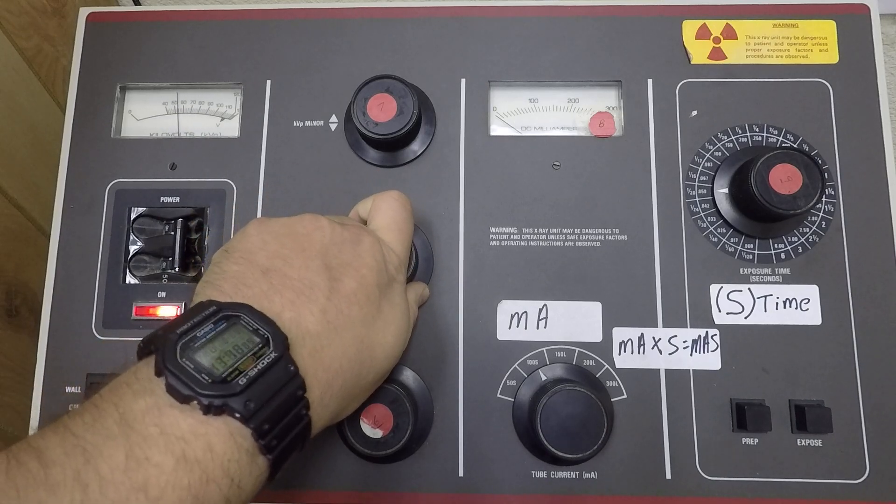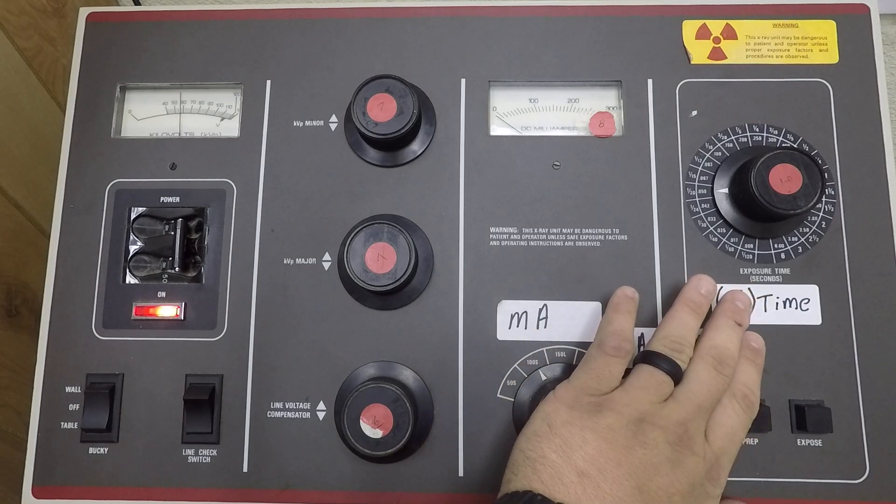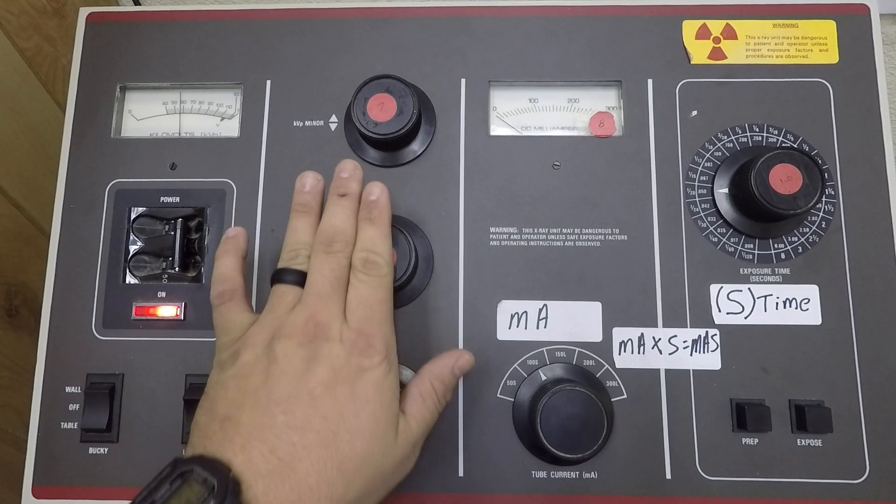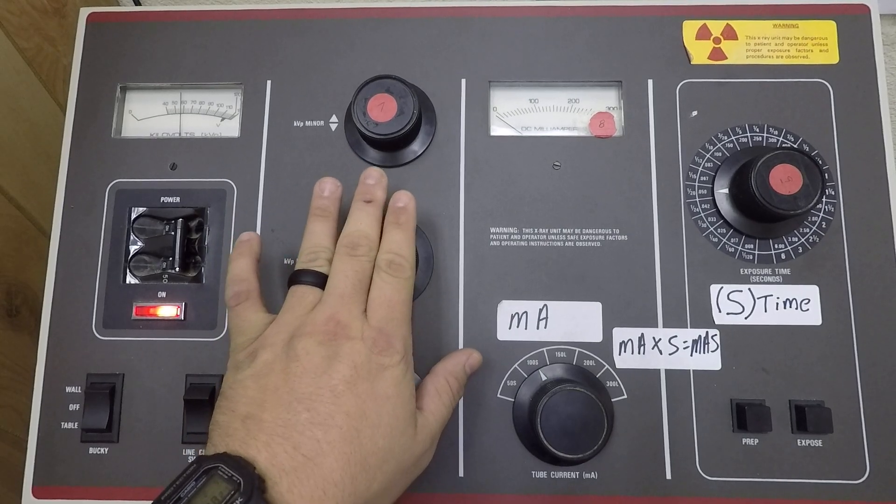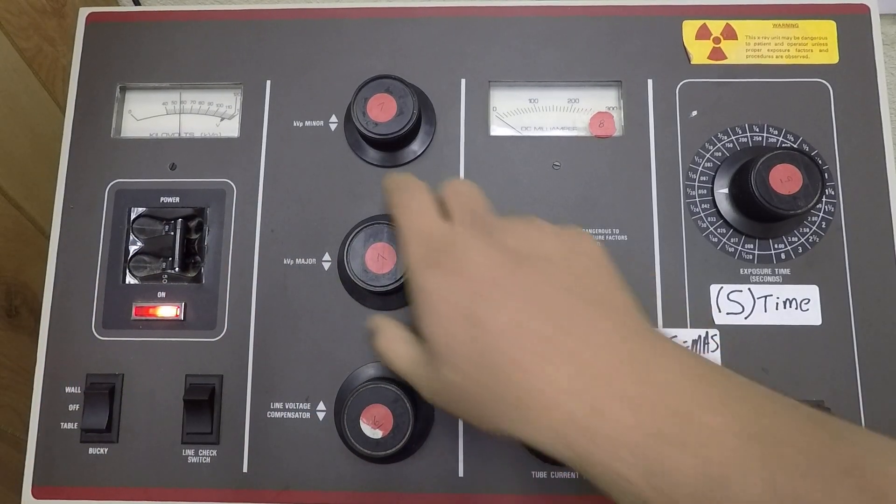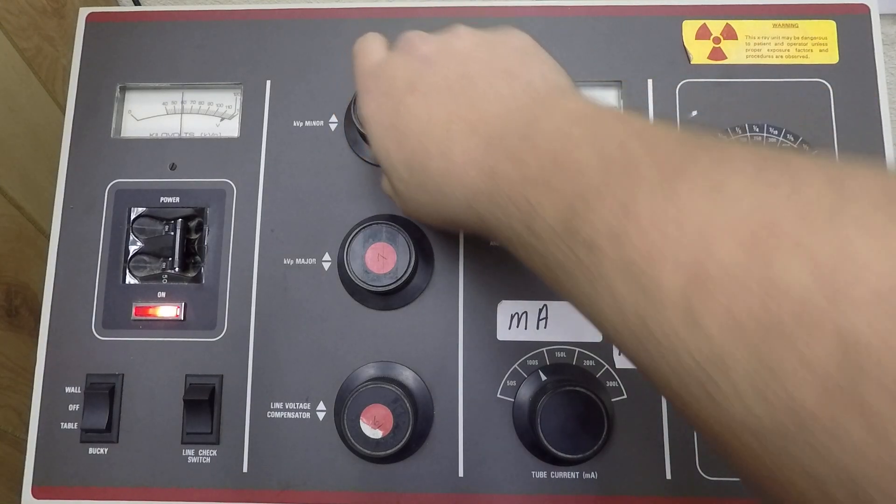When we make KVP adjustments, as I said earlier, every four centimeter increase in part thickness, we should double our technique. You can double your technique by doubling mass or making a KVP change. KVP changes, we make changes by 15 percent at a time. Roughly speaking, if you're at 60 KV,